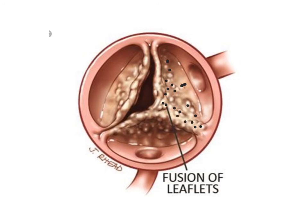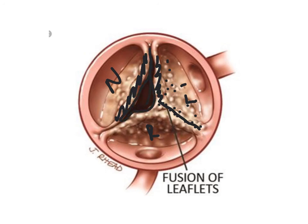Obviously here's the ridge that is fusing the leaflets together right here. This is kind of upside down, but this would be the right, and this would be the left. The non-coronary would be here. You can see how the edge of the leaflets is also becoming very thickened. That means the only opening is right here in the center of the valve. That will limit the amount of blood flow coming out and make it very hard for the heart to push an adequate amount of blood out to keep someone conscious.